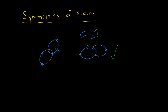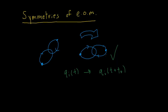There's another symmetry that's hard to draw. If we take all our coordinates Q sub i and change them to Q sub i of T plus T0, where T0 is some constant time offset, and if the original trajectories satisfied the equations of motion, then these new ones also satisfy the equations of motion. So we have three symmetries here: translational, rotational, and time symmetry.